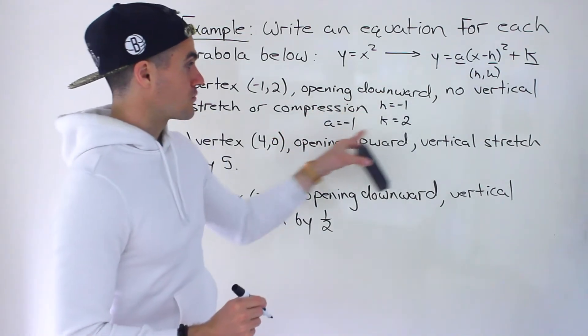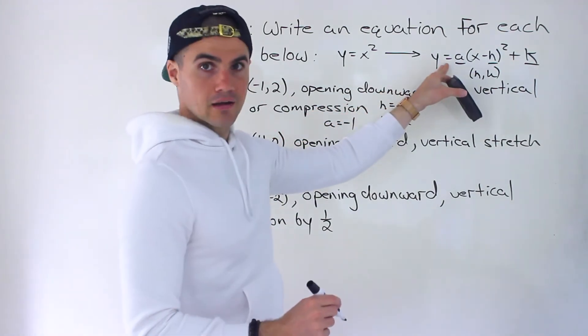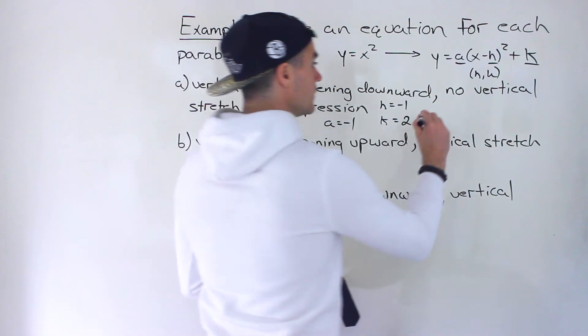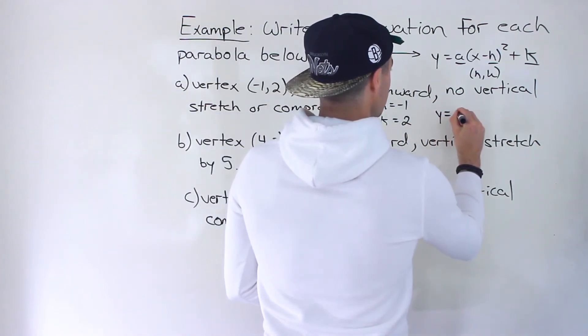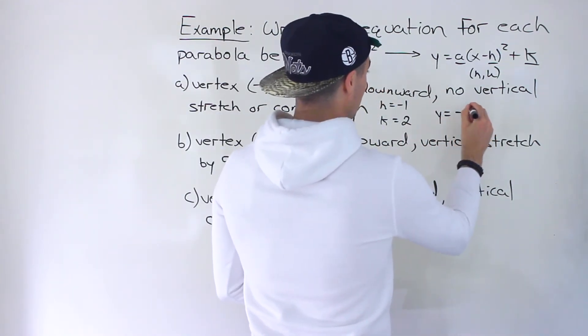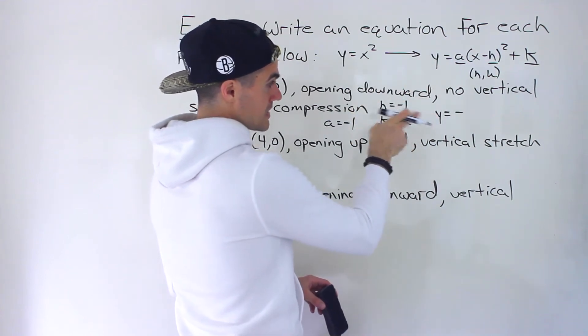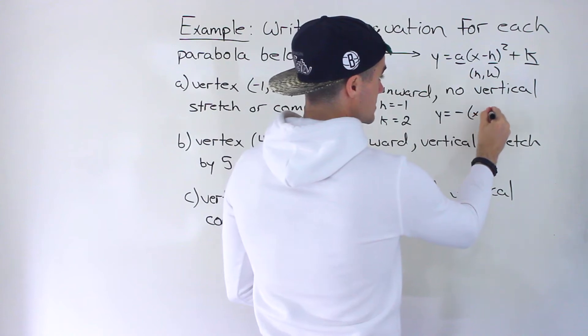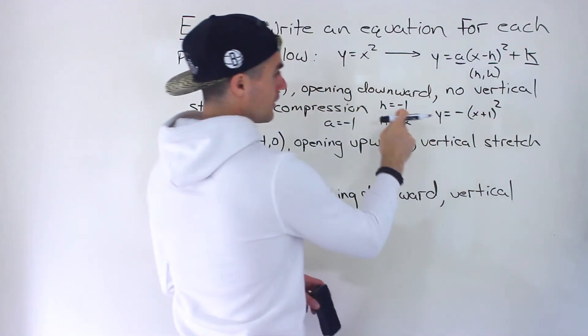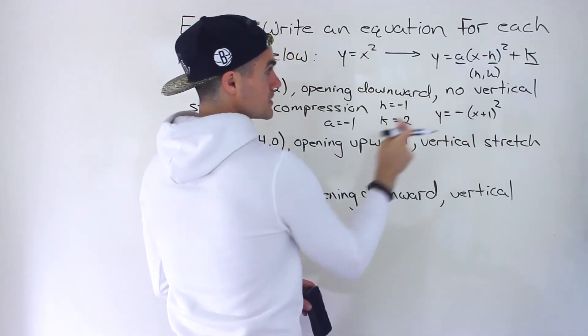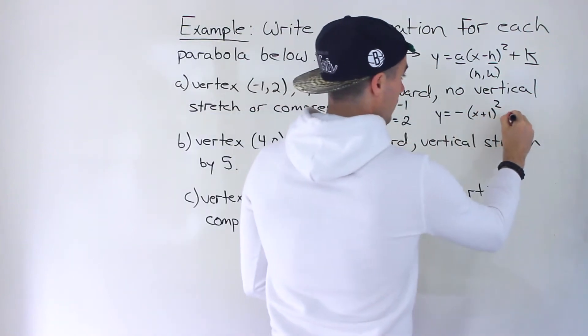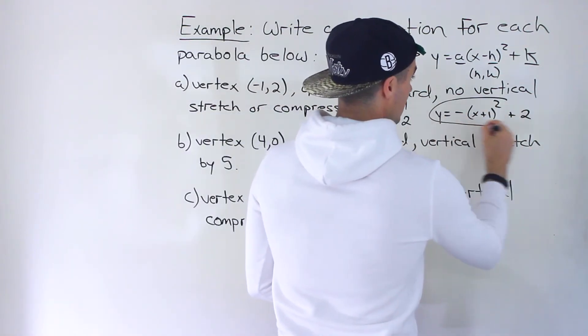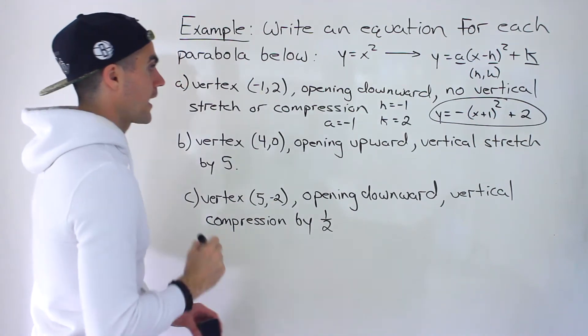So no vertical stretch or compression means the A value is just negative one. And so now we got all three letters. We just have to plug them in to that general format. So we'd end up with y equals negative one. We could just put a negative there and then be careful here, x minus H. So it's like x minus negative one. So it ends up being x plus one. Remember these signs, they always change. And then we have a plus two at the end. And so that's the answer for part A.